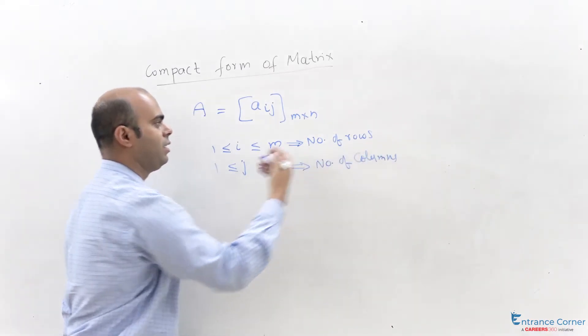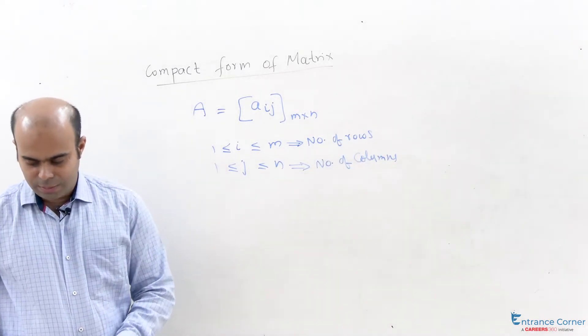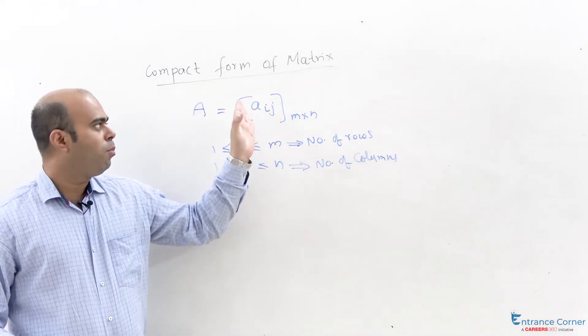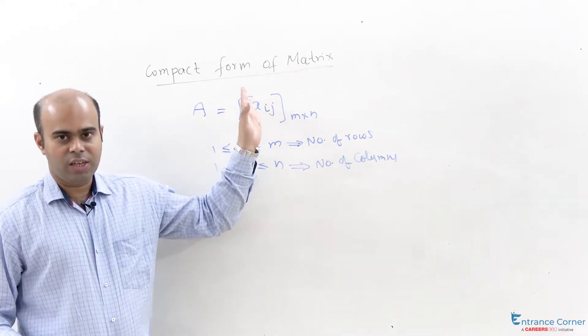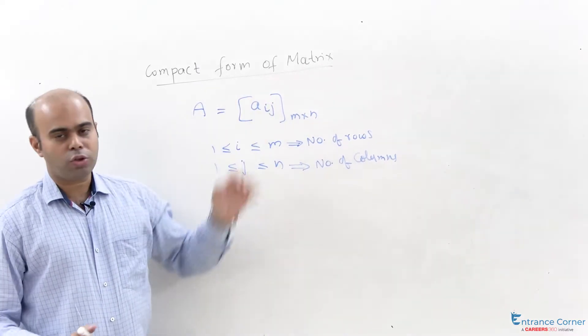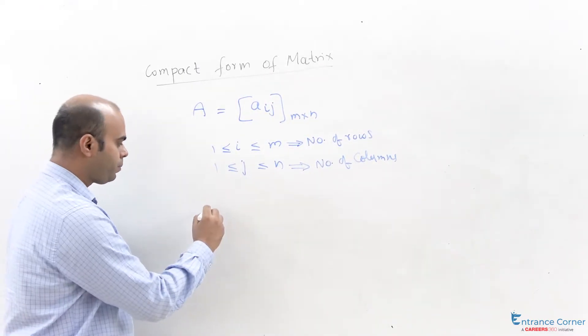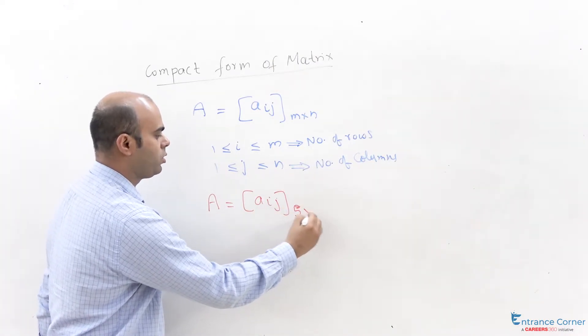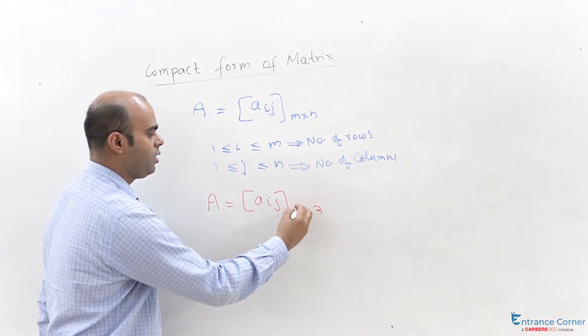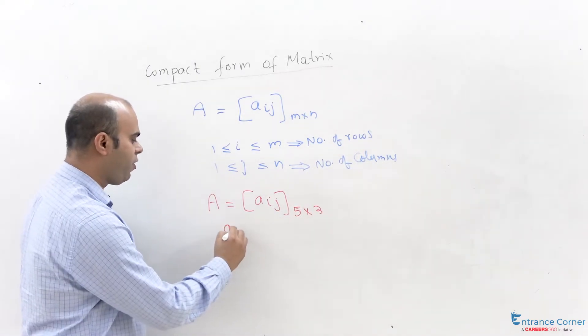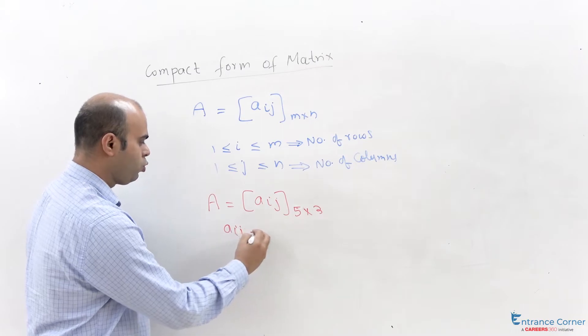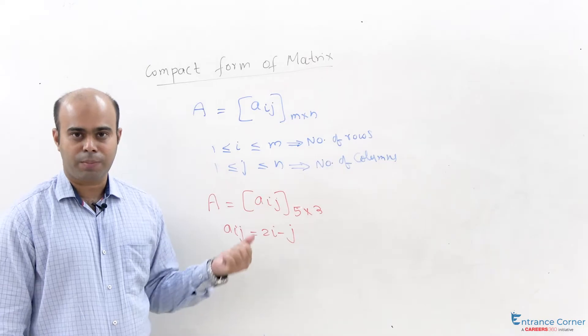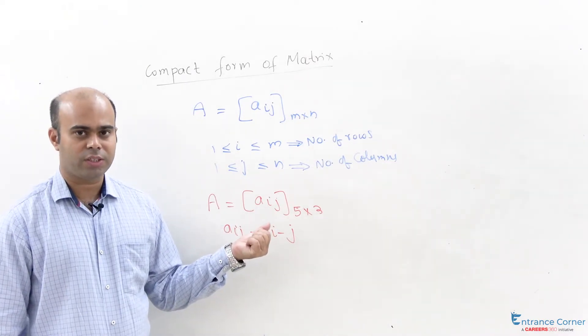So when we write it like this it simply means that we are denoting each and every element by a variable i and j and these are in the subscripts of a. For example if we take A equal to aij 5 cross 3 and we say that aij is defined as 2i minus j, then in that case we can also write the expanded form of this matrix.